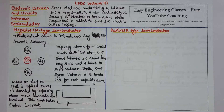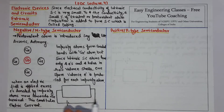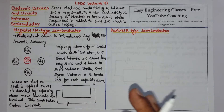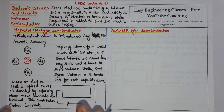So what is an extrinsic semiconductor? Since the electrical conductivity of an intrinsic semiconductor is very small, to increase the conductivity, a small percentage of trivalent or pentavalent atoms — also called impurities — is added to the pure semiconductor. This process is called doping.